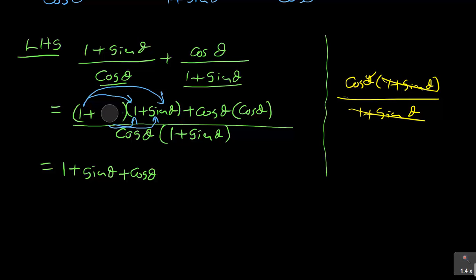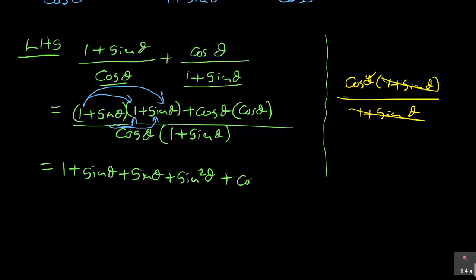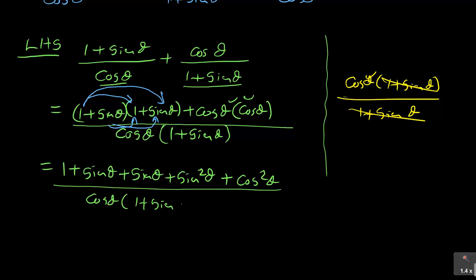Please correct that — it is sin θ there, not cos θ. So it's 1 × sin θ = sin θ, sin θ × 1 = sin θ, and sin θ × sin θ = sin²θ. Then plus cos θ × cos θ = cos²θ for that part. Divide all of that by the common denominator cos θ · (1 + sin θ). Don't open the bracket at the bottom.